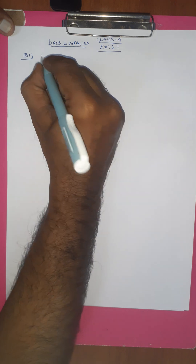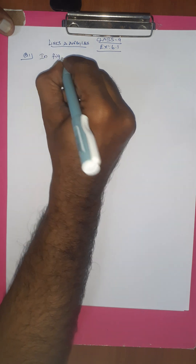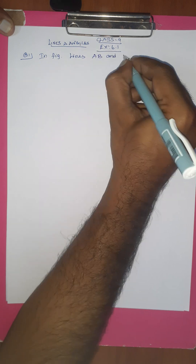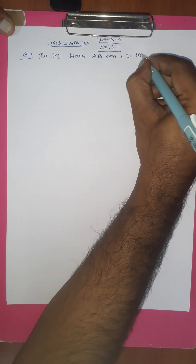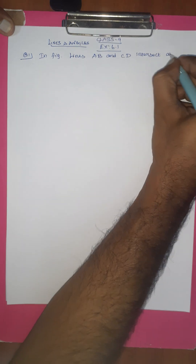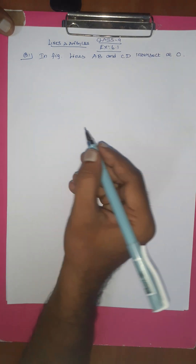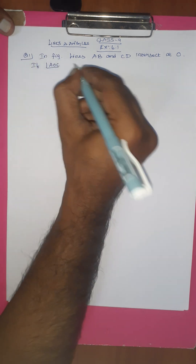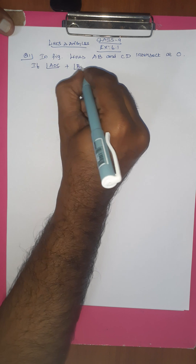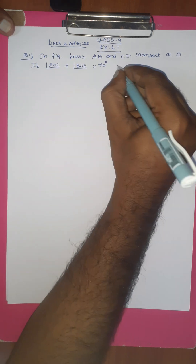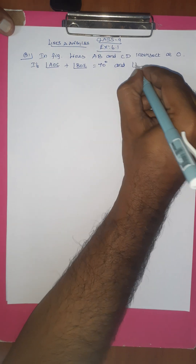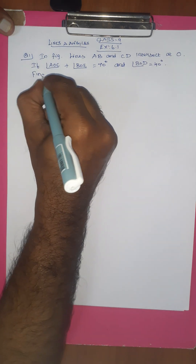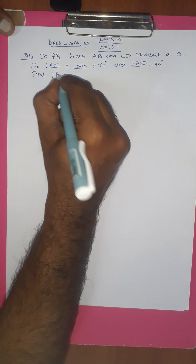The question is: in the given figure, lines AB and CD intersect at O. If angle AOC plus angle BOE equals 70 degrees and angle BOD equals 40 degrees, find angle BOE and reflex angle COE.